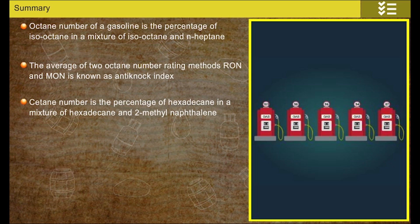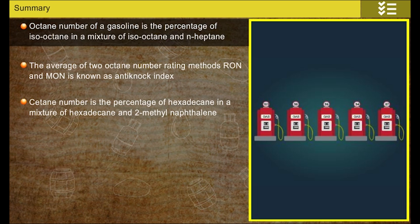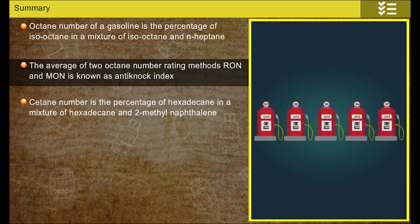In summary, the octane number of a gasoline is the percentage of isooctane in a mixture of isooctane and n-heptane. The average of the two octane number rating methods, RON and MON, is known as the Anti-Knock Index. The cetane number is the percentage of hexadecane in a mixture of hexadecane and 2-methyl naphthalene.